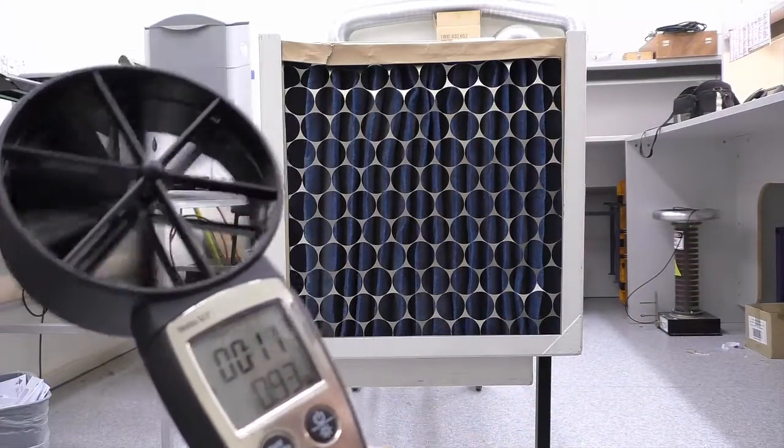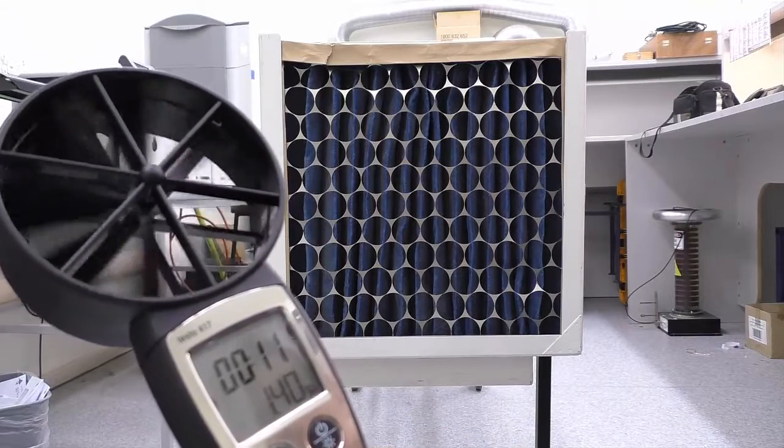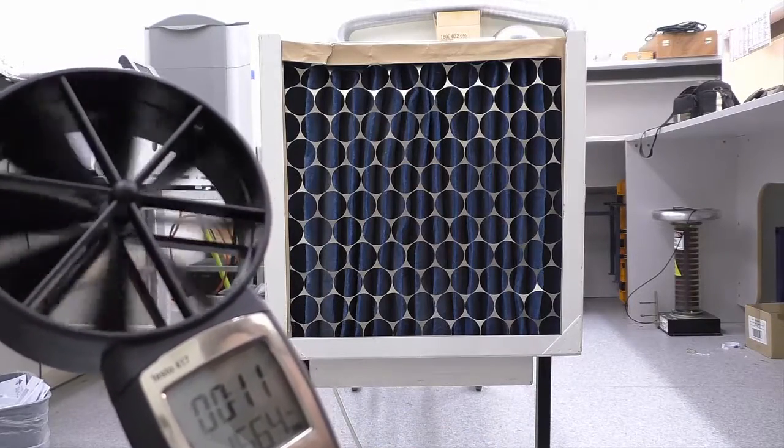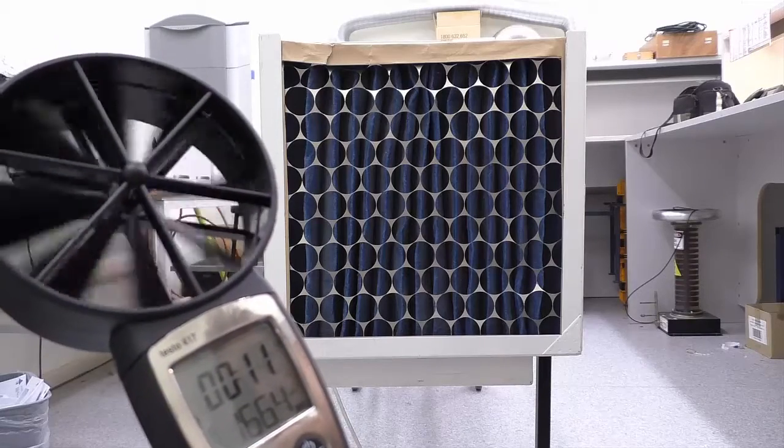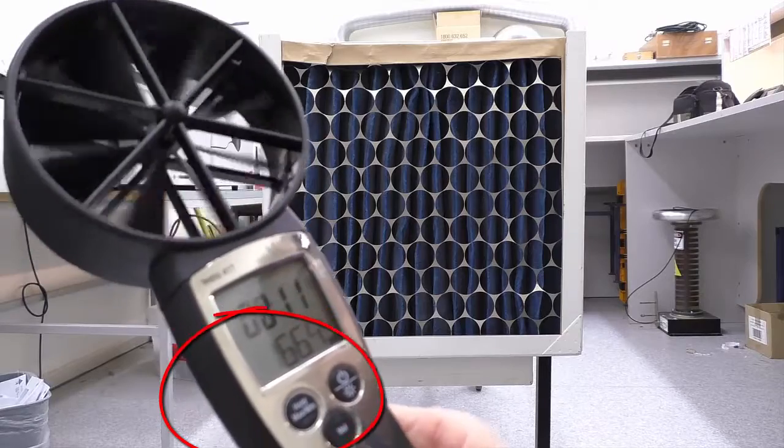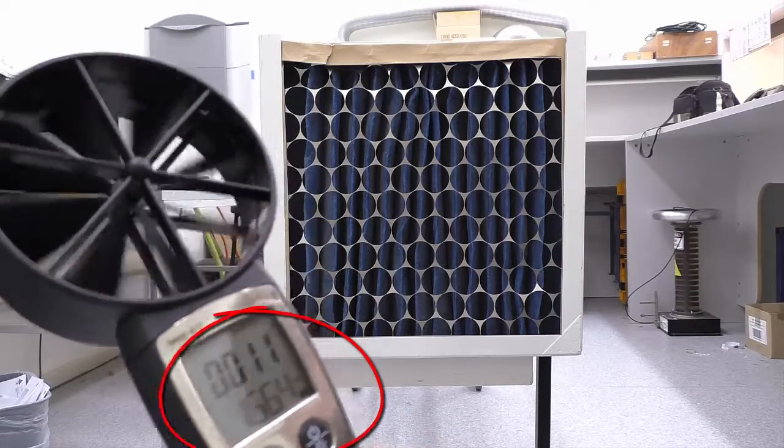I now push the mean button, which gives me a mean velocity. Now if I hit the volume button here, it will give me the volume, which is 166.4 liters per second, which is the throughput of this rig at that pressure.